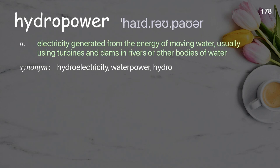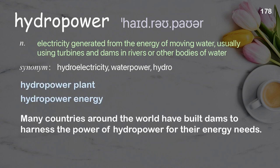Hydropower: electricity generated from the energy of moving water, usually using turbines and dams in rivers or other bodies of water. Examples: hydropower plant; hydropower energy. Many countries around the world have built dams to harness the power of hydropower for their energy needs.